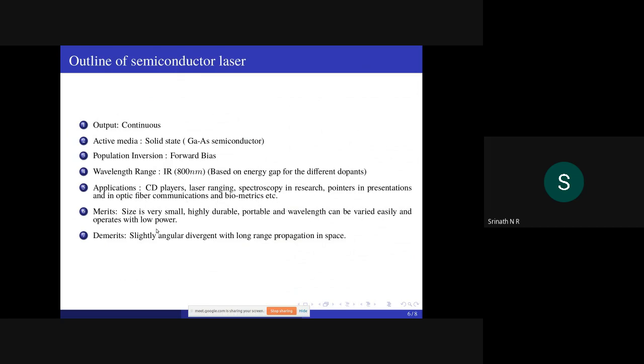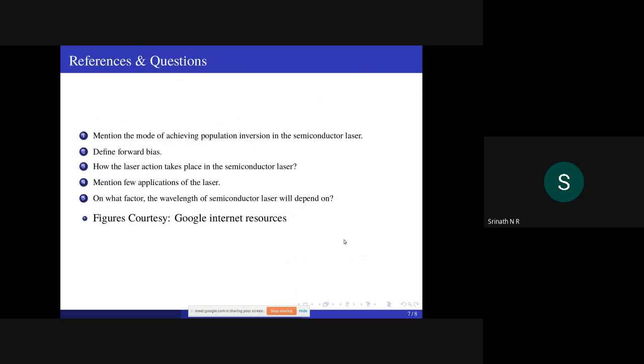Merits: size is very small, highly durable, portable, wavelengths can be varied very easily, and operates with low power. Demerits: slightly angular divergent with long range propagation in space and also temperature sensitive.